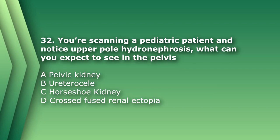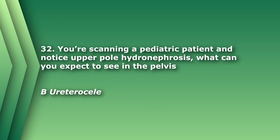Number 32. You're scanning a pediatric patient and notice an upper pole hydronephrosis. What can you expect to see in the pelvis? A. A pelvic kidney. B. Ureterocele. C. Horseshoe kidney. D. Crossed fused renal ectopia. The answer is B, ureterocele. This patient likely has a duplicated kidney with an upper pole moiety hydronephrosis and an ectopically inserted ureter.